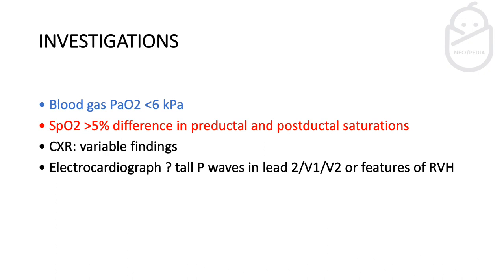If there is any difference of more than 5% between pre- and post-ductal saturations, that's significant. Chest X-ray might show variable findings — if there is a lung pathology you can notice that, but sometimes the X-ray will be completely normal. On ECG you can sometimes find tall P waves in lead II, V1, V2, or features of right ventricular hypertrophy.